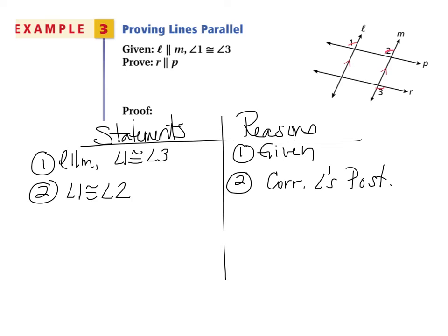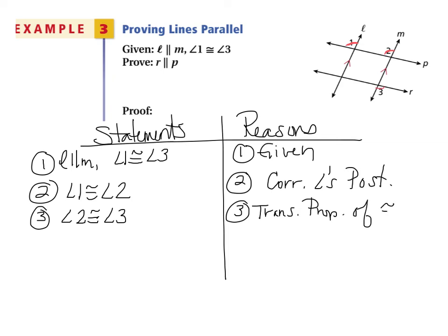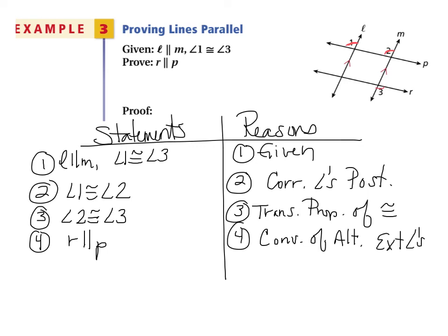Now we know angles 1 and 2 are congruent and angles 1 and 3 are congruent, so angle 2 is congruent to angle 3 by the transitive property of congruence. Because angle 2 and angle 3 are congruent and they are alternate exterior angles, we can conclude that line R is parallel to line P by the converse of the alternate exterior angles theorem.